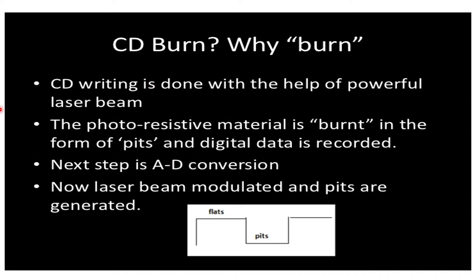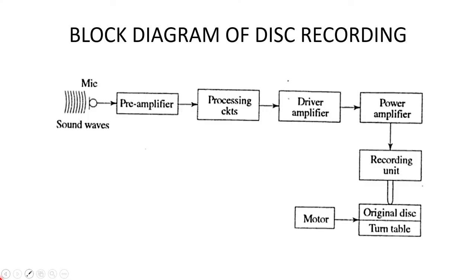CD burn — whenever we are putting data on the CD it is called a burn. CD writing is done with the help of a powerful laser beam. The photoresistive material is burned in the form of bits and digital data is recorded. The next step is analog to digital conversion, then the laser beam is modulated and bits are generated. The recording of data takes place in the form of flats and pits.